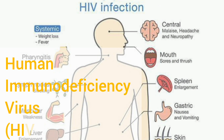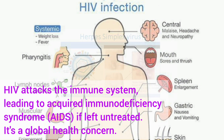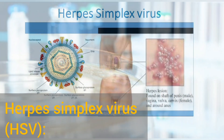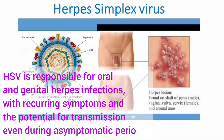Human immunodeficiency virus, HIV — HIV attacks the immune system, leading to acquired immunodeficiency syndrome, AIDS, if left untreated. It's a global health concern. Herpes simplex virus, HSV — HSV is responsible for oral and genital herpes infections, with recurring symptoms and the potential for transmission even during asymptomatic periods.